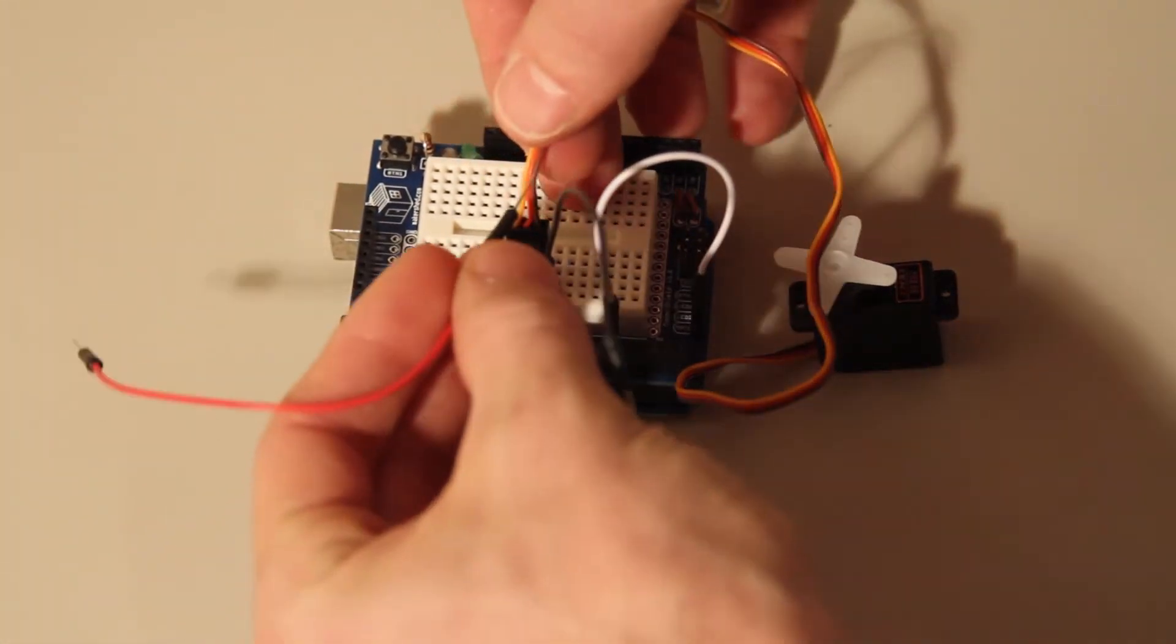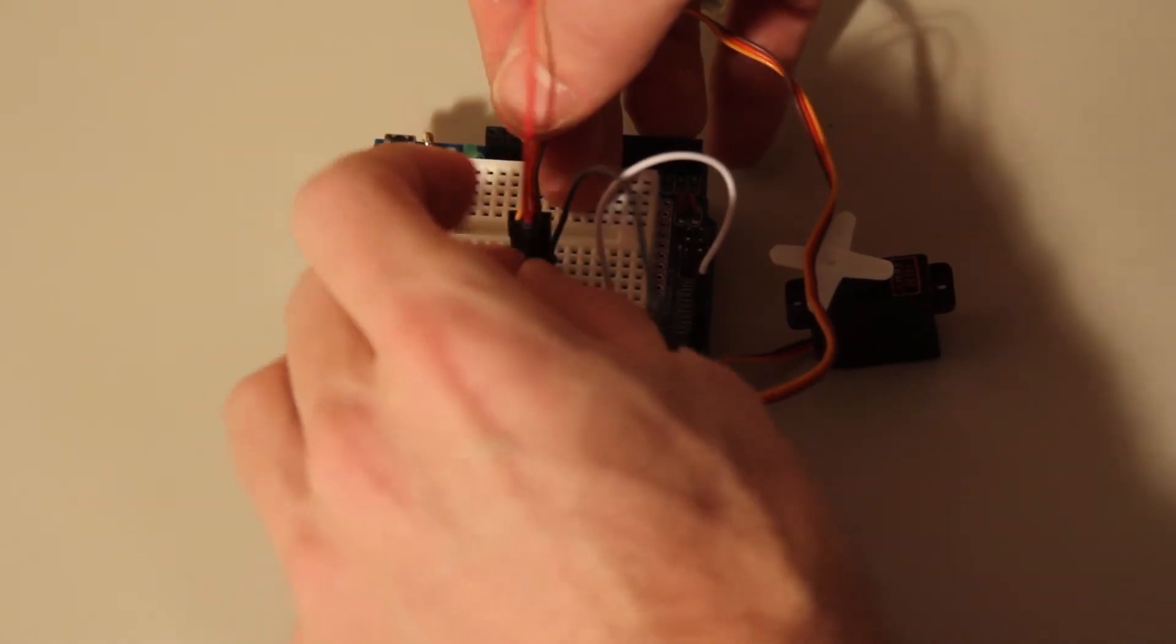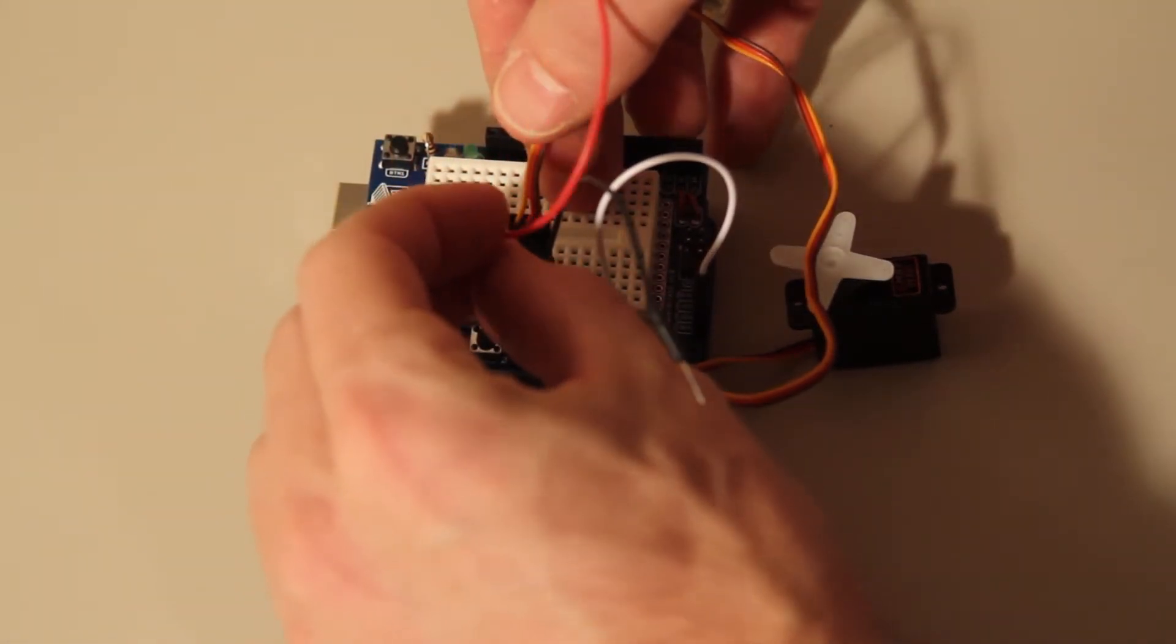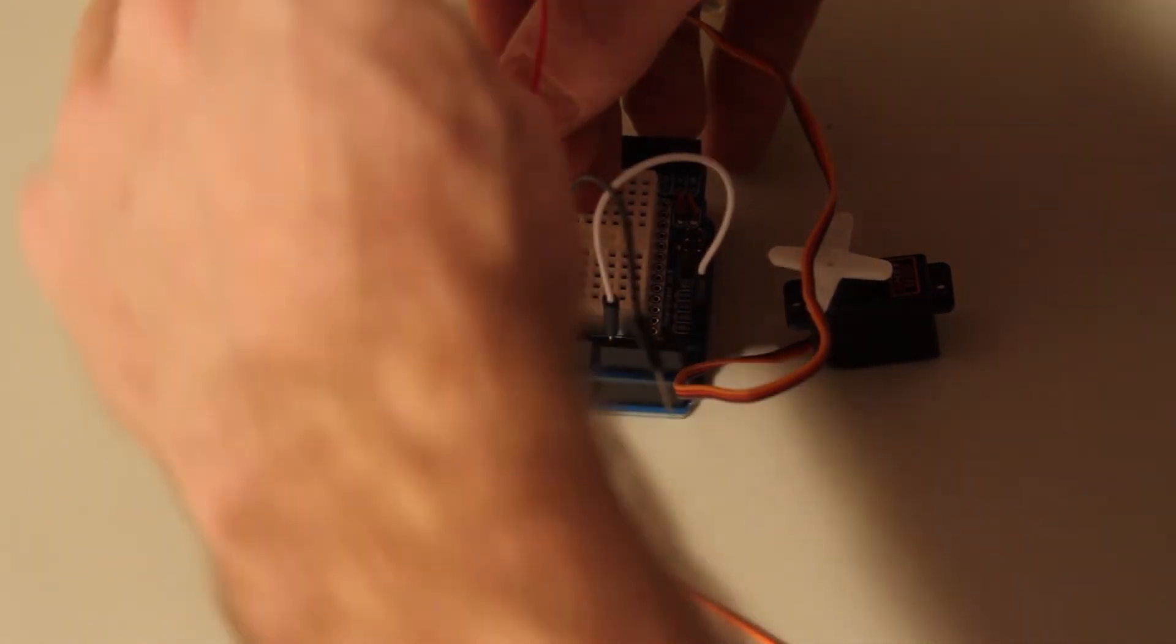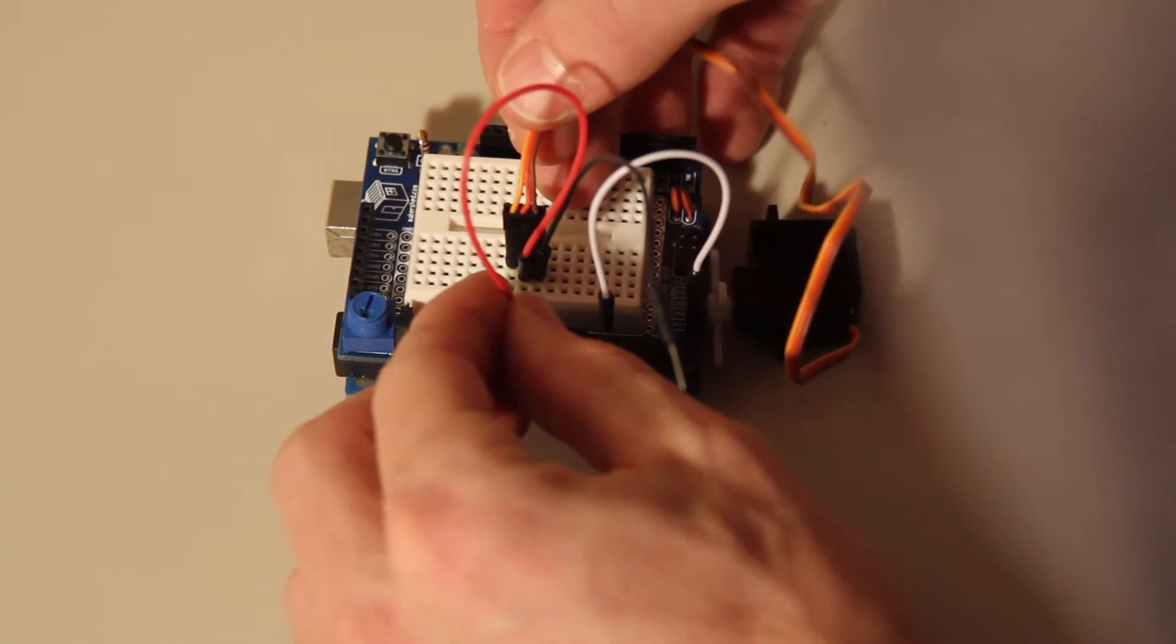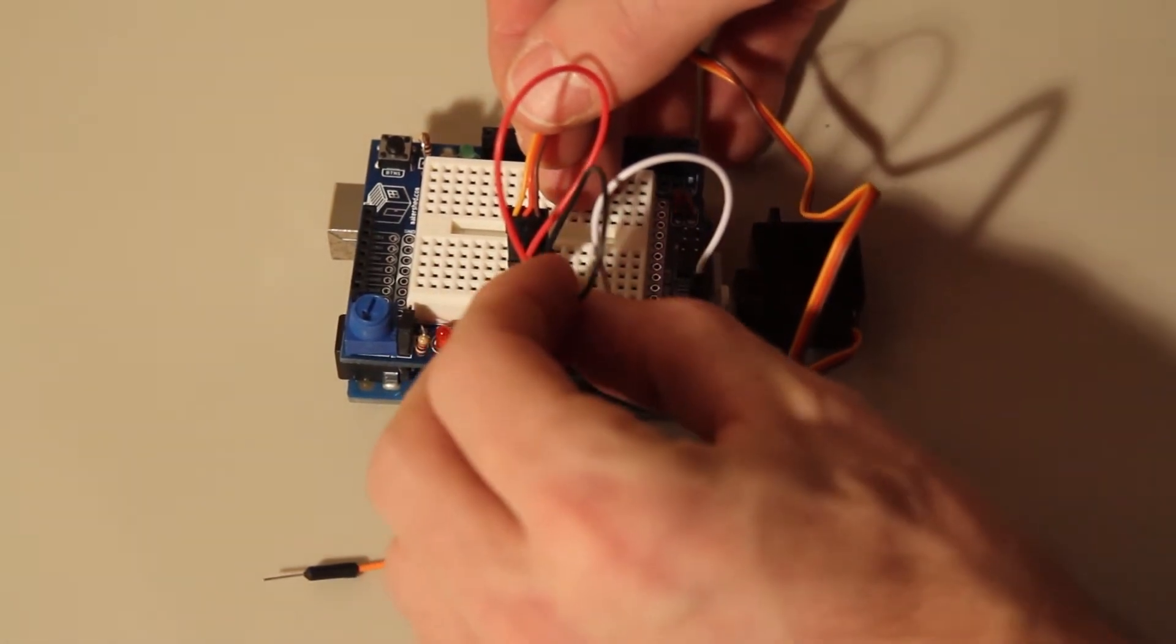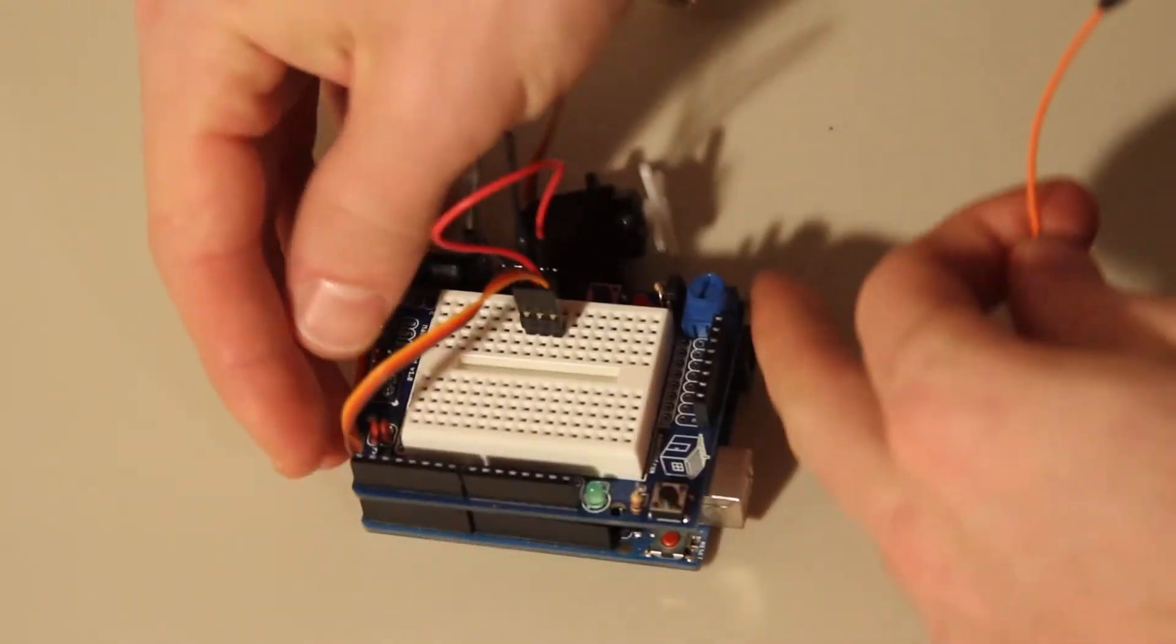The middle pin or the middle wire on the servo is the power. So we'll put the middle one. Power we're going to take to 5 volts, so positive 5 volts. I'm going to take the brown to ground. And then on the back side, doing the ground here.